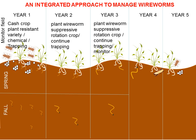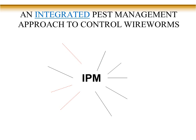In year two, you do the same thing — you continue. In one of those years you use a suppressive crop and you continue with your trapping and monitoring. In your cash crop year, you can apply your chemical again and continue to trap. Your chemical — Thymet — is only registered for potatoes, so that's your cash crop application. That's how you would use this integrated pest management strategy in your fields. Eventually your goal is to reduce the adult population and reduce the number of eggs in your field.